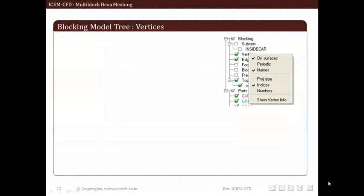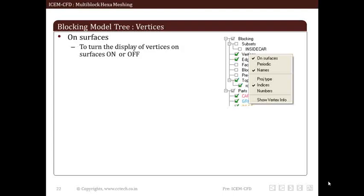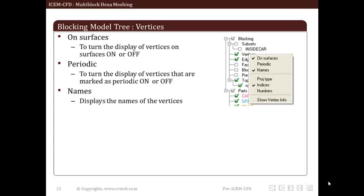The vertices option in blocking allows us to play with visibility of vertices. Below are details of various buttons under this. By enabling on surface, we can turn on vertices associated to surfaces. By enabling periodic, turns on vertices which are assigned as periodic. By enabling names, displays names of vertices.